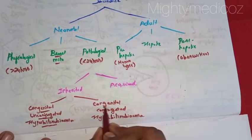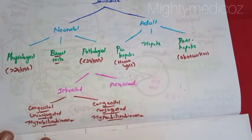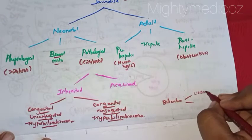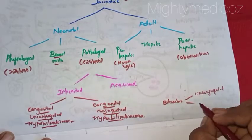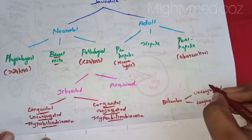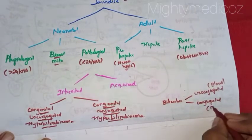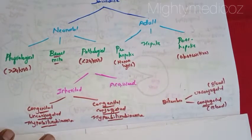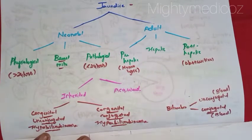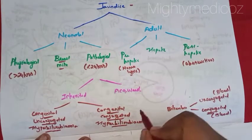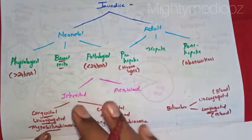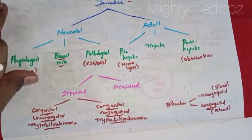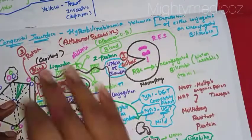There is Congenital Unconjugated Hyperbilirubinemia and Congenital Conjugated Hyperbilirubinemia. In bilirubin, we have two types: Unconjugated Bilirubin, which is water insoluble but soluble in blood, and Conjugated Bilirubin, which is soluble in both blood and water and can be excreted in urine and feces. In this class, we have discussed congenital jaundice in detail.